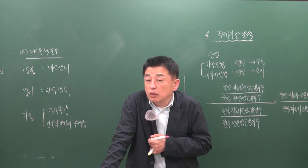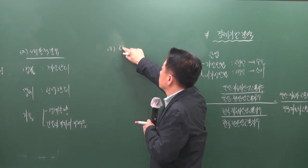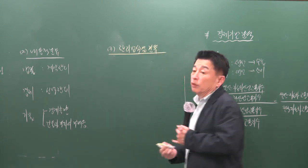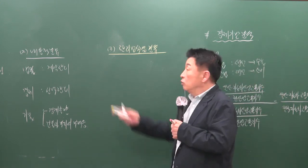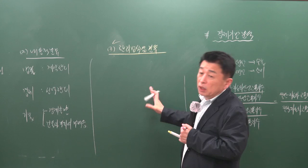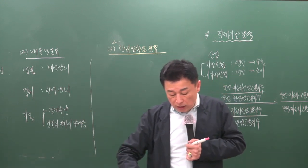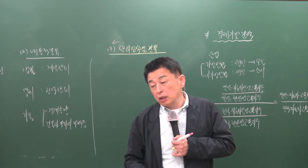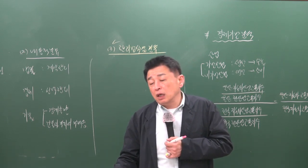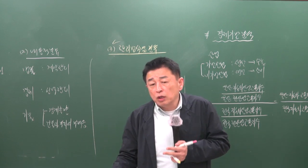관리 방식별 분류에는 자관리, 위탁관리, 혼합관리가 있으며, 이 중 종합적인 관리가 가능한 방식이 무엇인지가 출제됩니다. 상식적인 수준에서 풀 수 있게 출제됩니다.